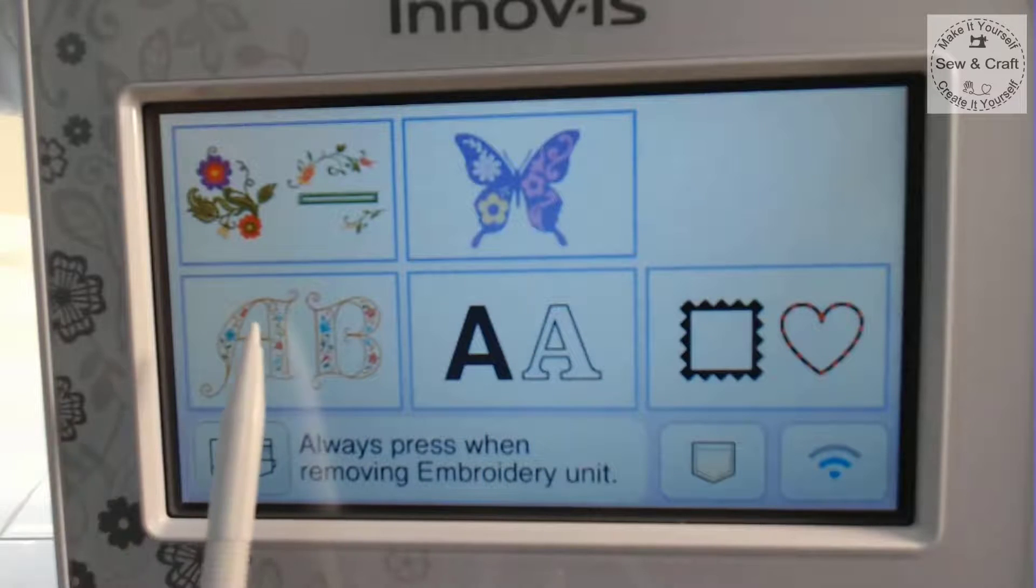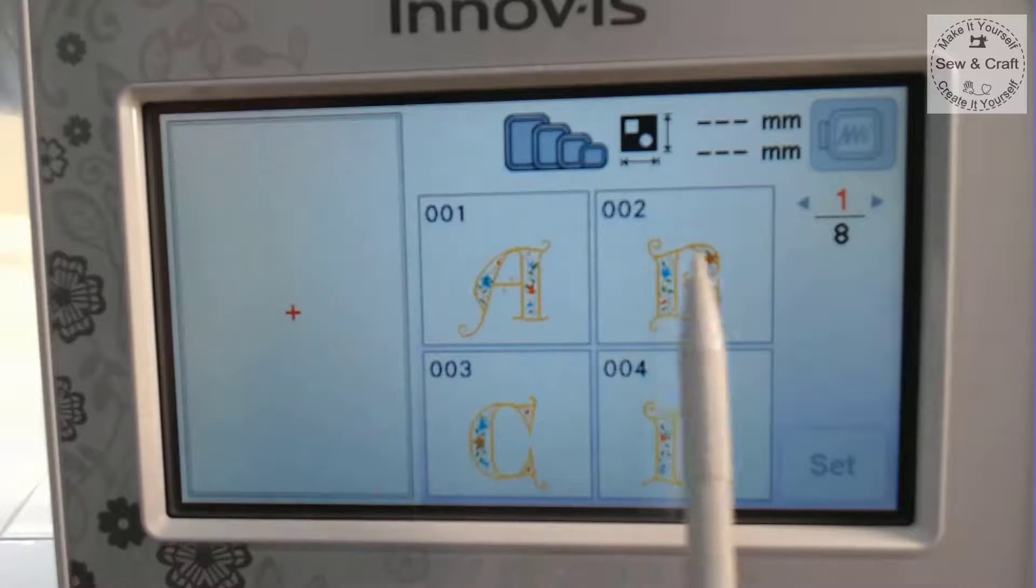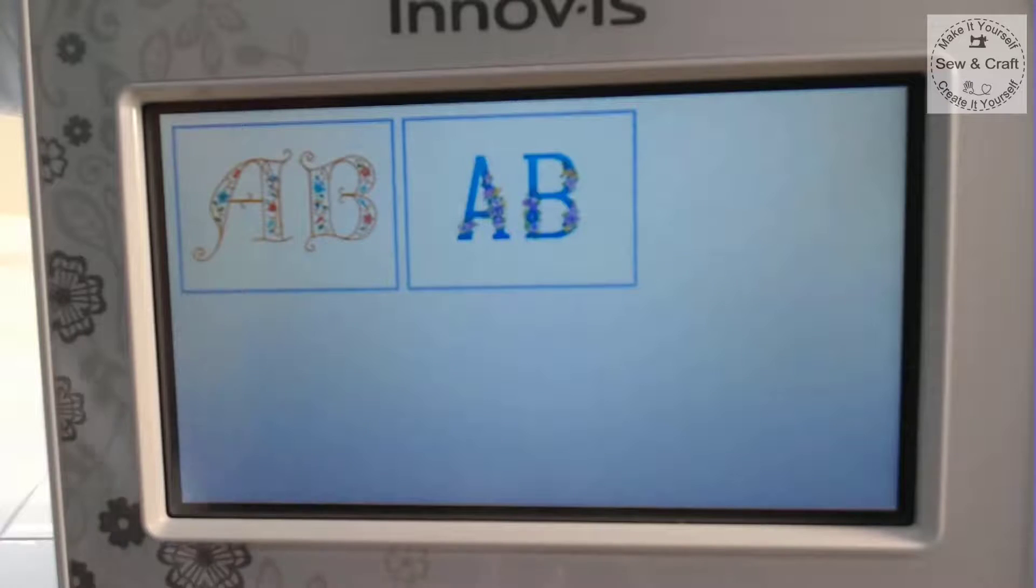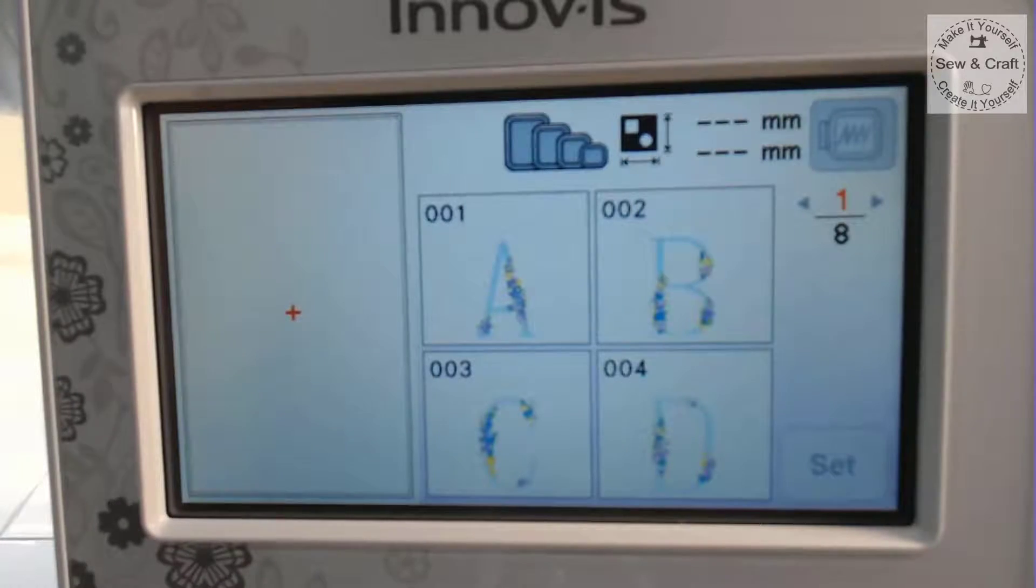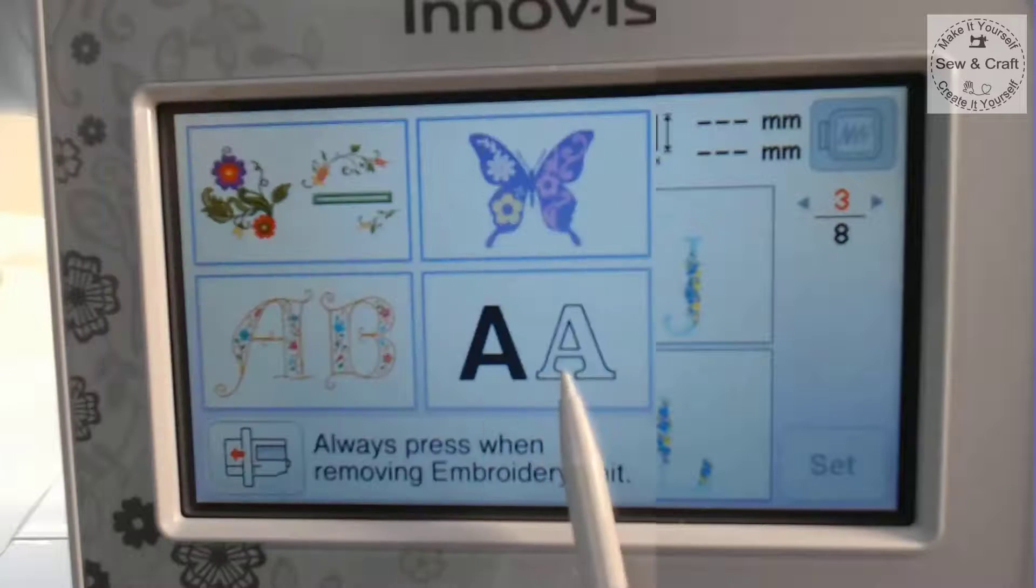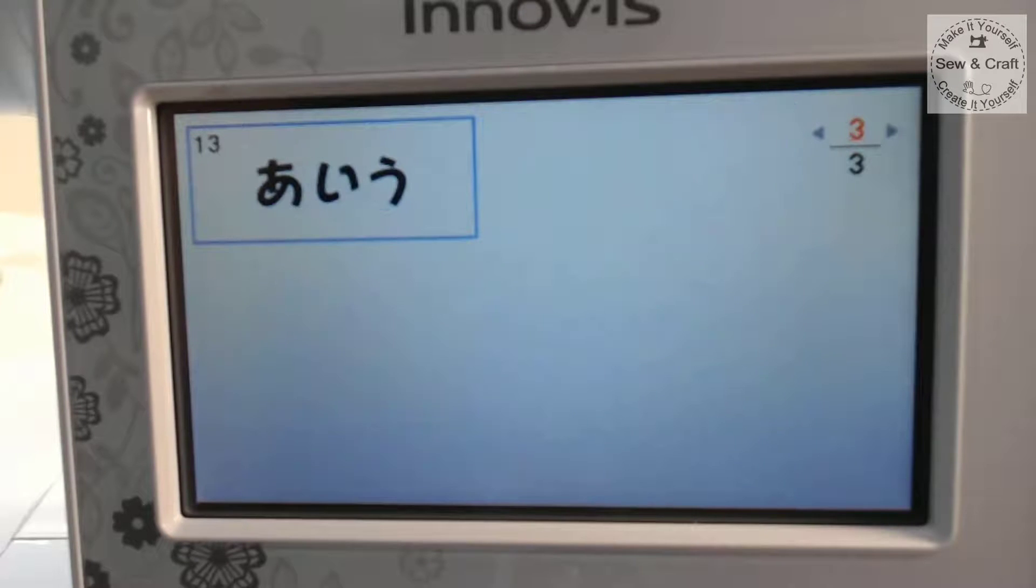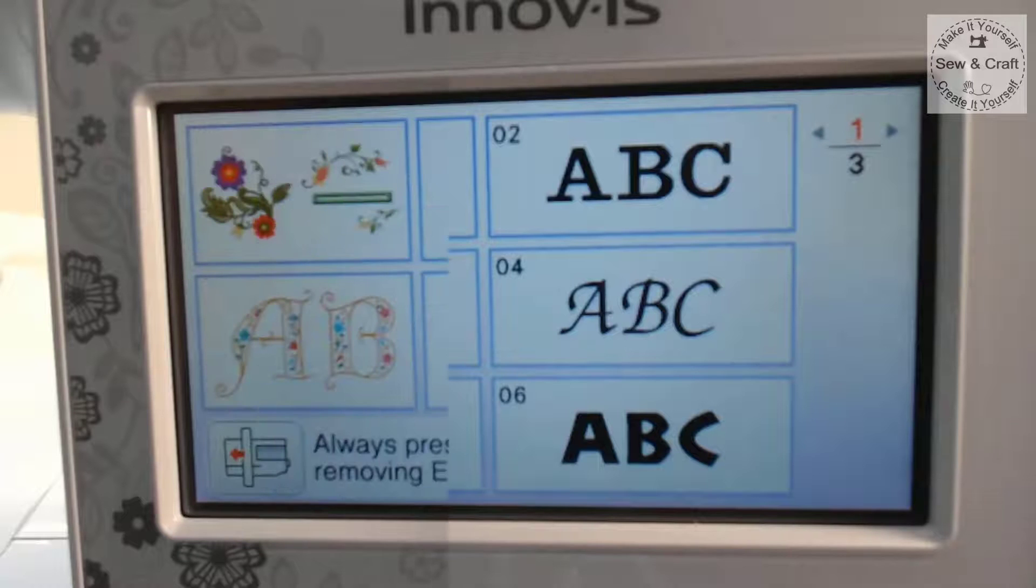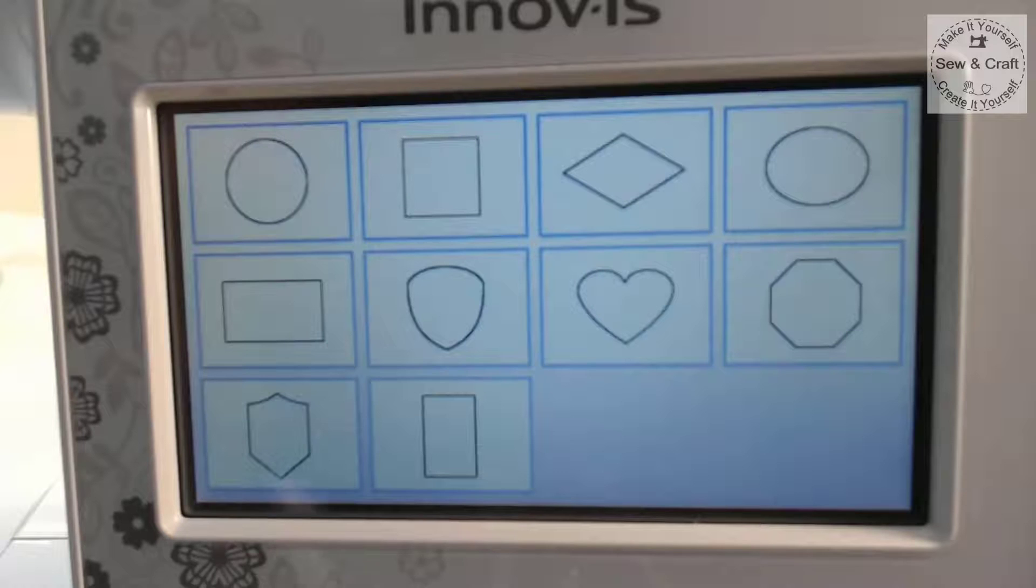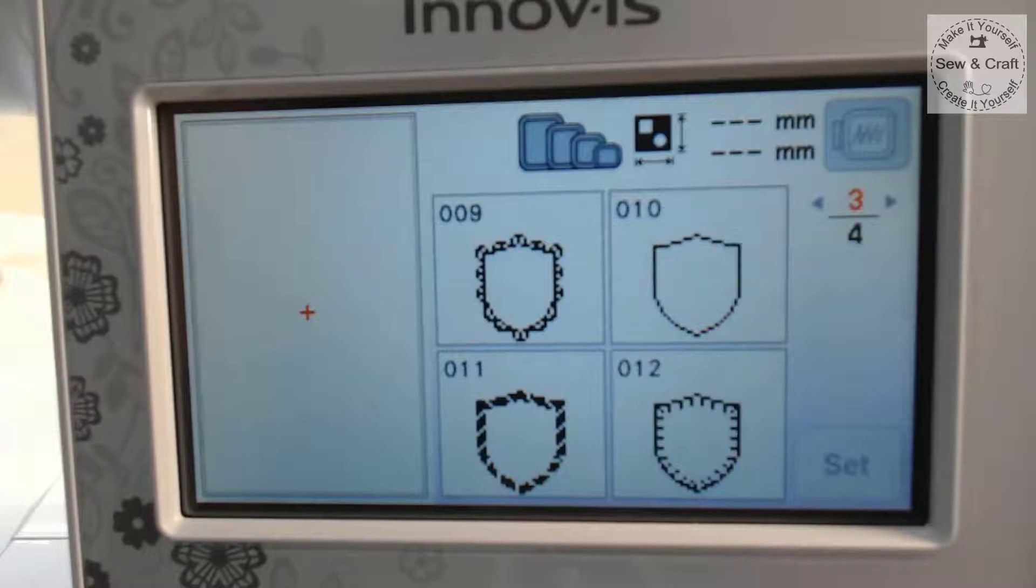In the third category there are two subcategories with selections of large monograms. The fourth category is where you'll find the fonts, with three pages that include all 13 fonts built in on the machine. The last category has 10 different shapes, and each shape can be stitched in 14 different stitch styles. That's why you have 140 different combinations, because you can stitch each one in 14 different styles.